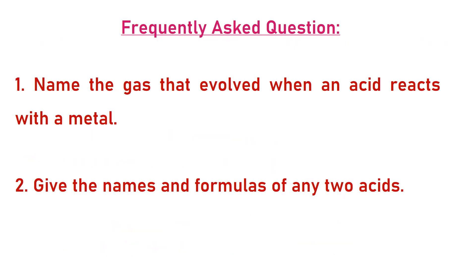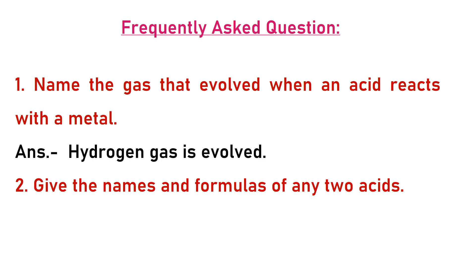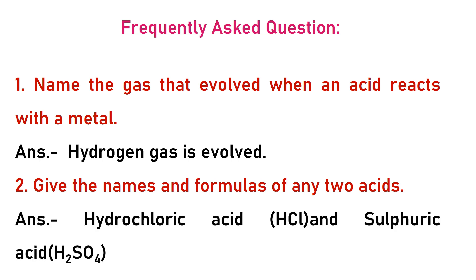Frequently asked questions: First question — name the gas evolved when an acid reacts with a metal. Any acid reacting with any metal forms hydrogen gas. Second question: give the names and formulas of any two acids. Hydrochloric acid — HCl; sulfuric acid — H₂SO₄.